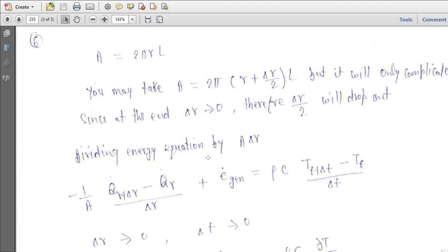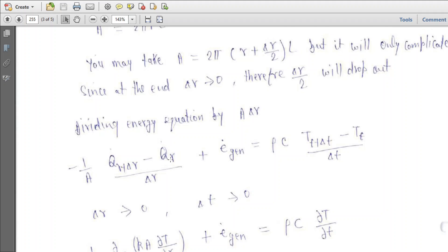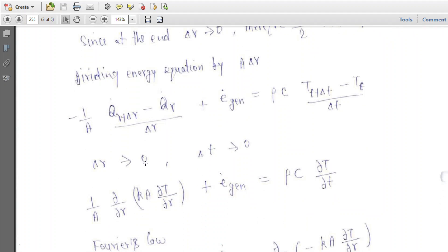Dividing the energy equation by A·ΔR. Now taking the limits as ΔR and Δt approach zero, you will get (1/A·ΔR)(K·A·ΔT/ΔR) plus Ė_gen equals ρc_p·∂T/∂t.